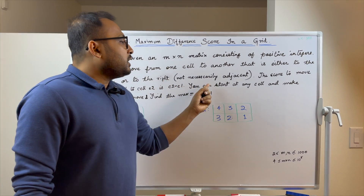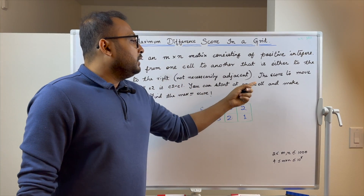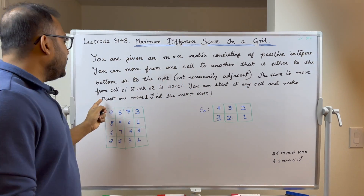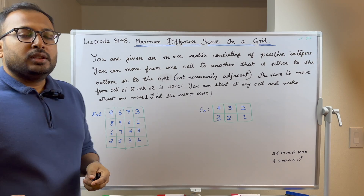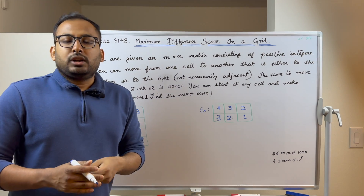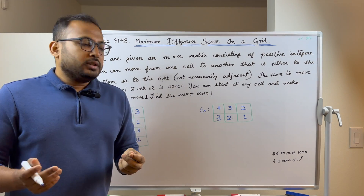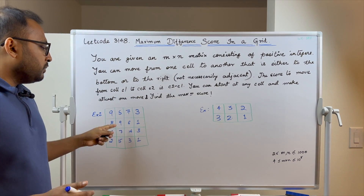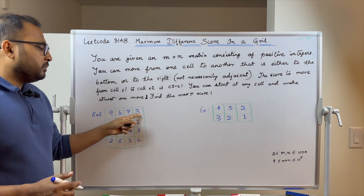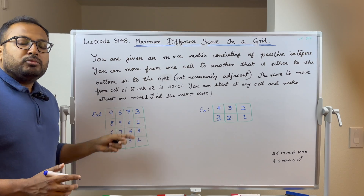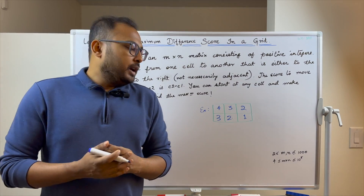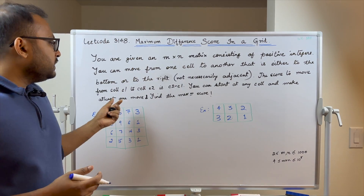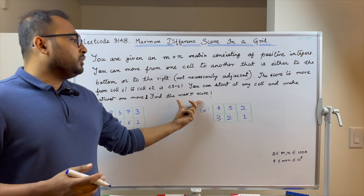You can start at any cell and must make at least one move. The problem asks you to find the maximum score that you can achieve.